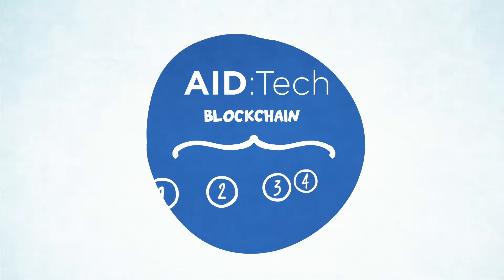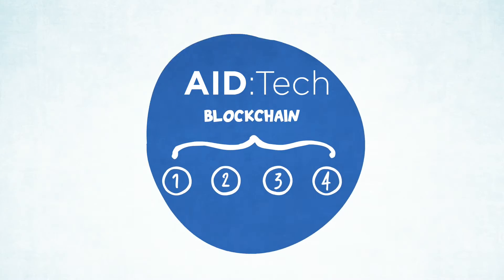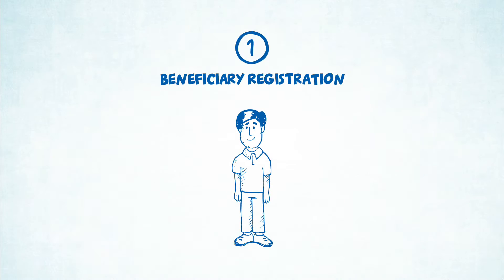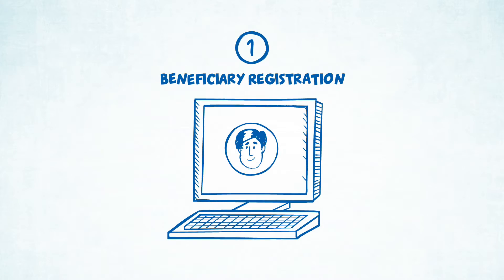Aidtech's solution harnesses blockchain in four ways. First, NGOs, governments and charities can quickly capture a beneficiary's details, creating a digital identity on our platform.